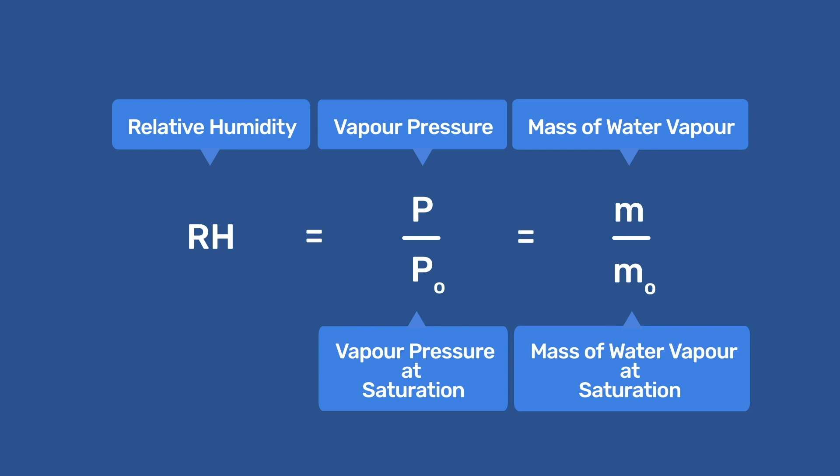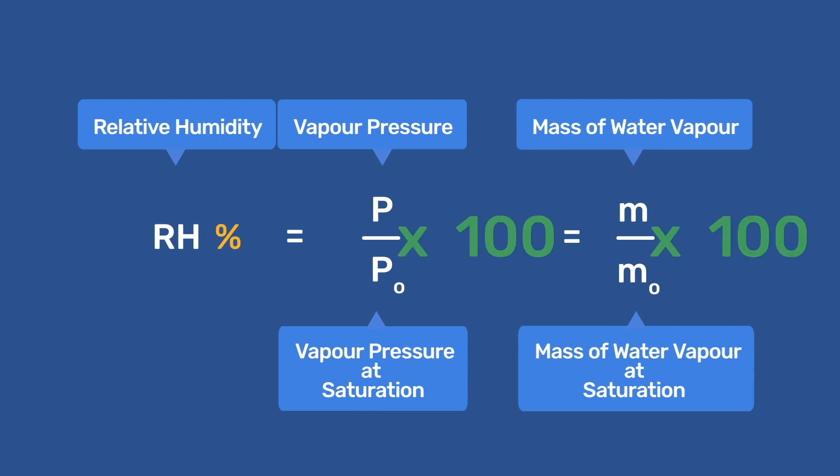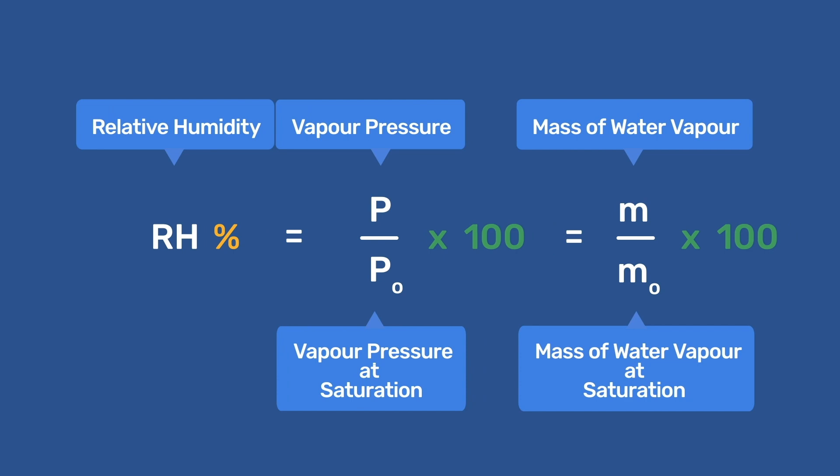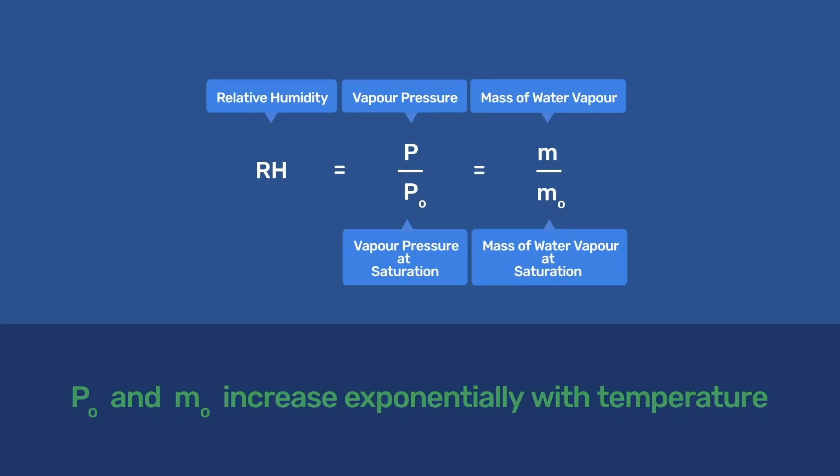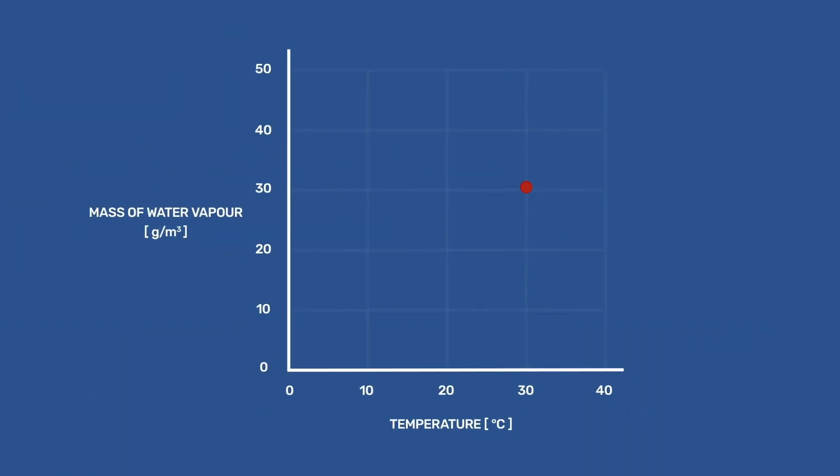Relative humidity is usually reported as a percentage, which would require multiplying the above equations by 100. Both P0 and M0 increase exponentially with temperature. For example, M0 is about 31 grams per cubic meter at 30 degrees Celsius, while it is only 11 grams per cubic meter at 10 degrees Celsius.